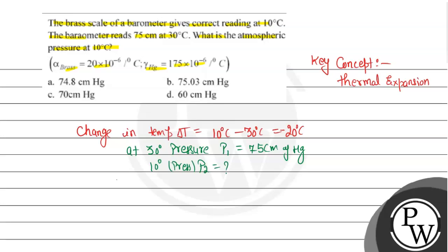We can use here the formula: P2 will be equal to P1 into 1 plus the coefficient of thermal expansion for brass and mercury. Because due to the change in temperature, both mercury and brass will change in value with respect to their coefficients. So we will write here gamma Hg minus alpha for brass — this will be the net value for both — and it will be multiplied with the change in temperature.